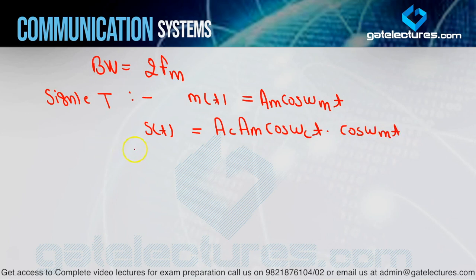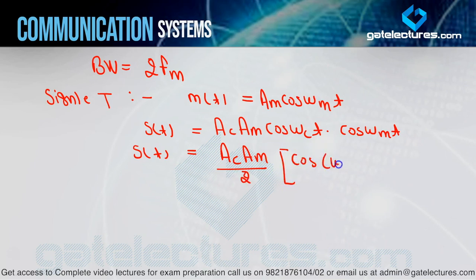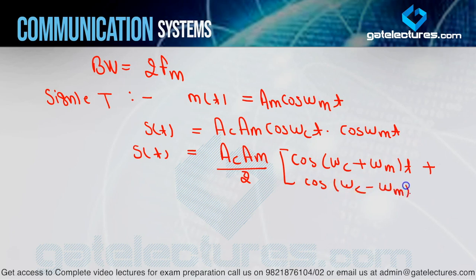Putting m(t) = Am·cos(ωm·t) into the DSB-SC equation gives: S(t) = AC·Am·cos(ωC·t)·cos(ωm·t). Applying the formula cos A·cos B = [cos(A+B) + cos(A−B)] / 2, we get: S(t) = (AC·Am/2)·[cos(ωC + ωm)t + cos(ωC − ωm)t]. Now let me draw the spectrum for single-tone modulation to show the bandwidth is again 2FM.